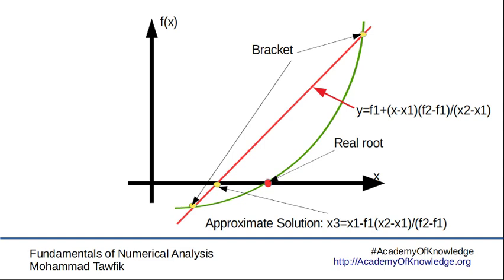Generally speaking, the false position method should be faster, should be better. The cost, the computational cost, is not that much. So it's not a bad choice at all to use for finding the root for nonlinear equation.